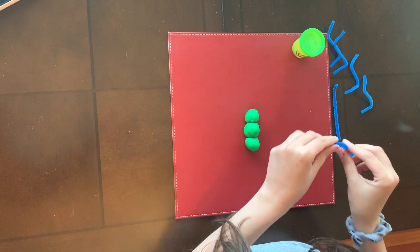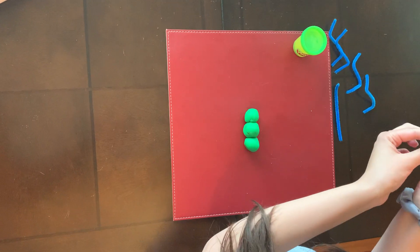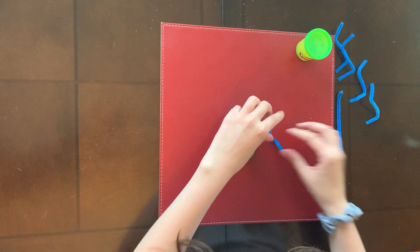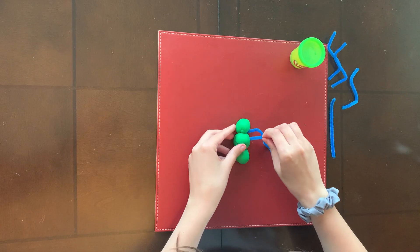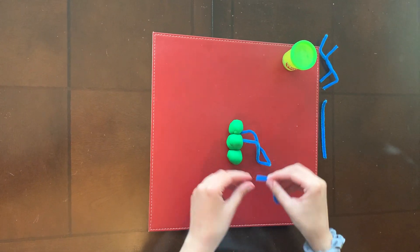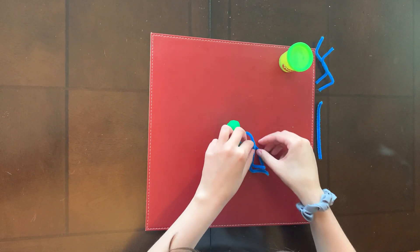Then for our legs, I just put a bend in the top and a bend at the bottom. An ant has six legs, so there's going to be three on each side of our ant.